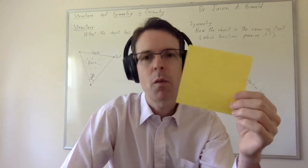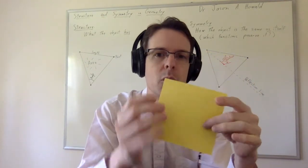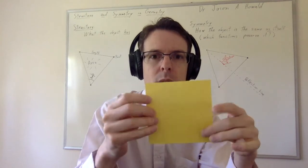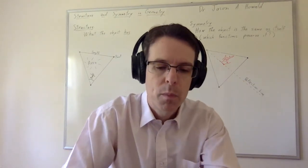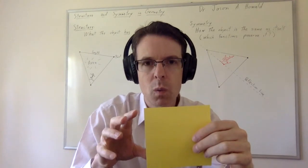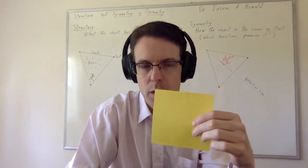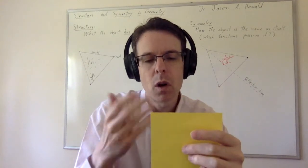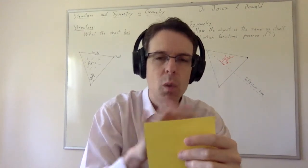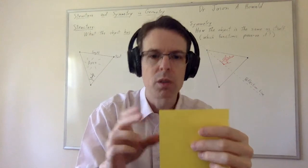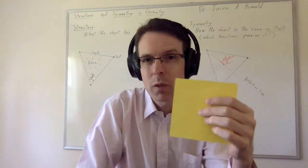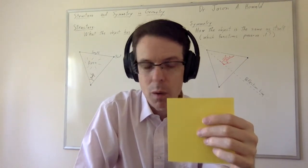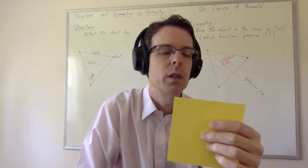We're all familiar with the structure of the square and the symmetries of the square. The symmetries of the square are the rotational symmetries and also the reflectional symmetry. I want to distinguish between the structural characteristics of the square and the symmetry characteristics of the square. The square has certain internal features: it has points, it has lines, it has this internal area. It also has color, although we won't treat that as geometrically relevant in abstract mathematics.